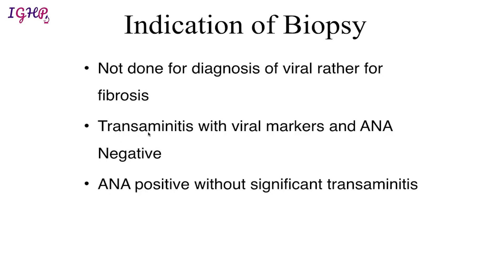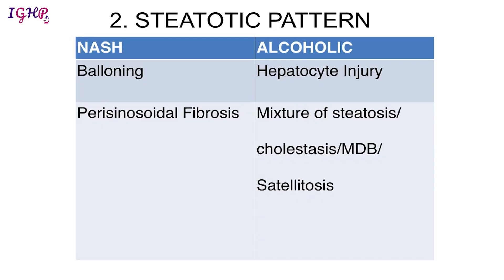A second indication is when there is transaminitis but the patient has normal viral markers and ANA is negative — liver biopsy is done to look for the etiology. The third indication is ANA positive without any significant transaminitis: if the patient has auto-antibody levels of more than 1:360 and no significant transaminitis, a liver biopsy may still be performed to assess the degree of necroinflammation within the liver.